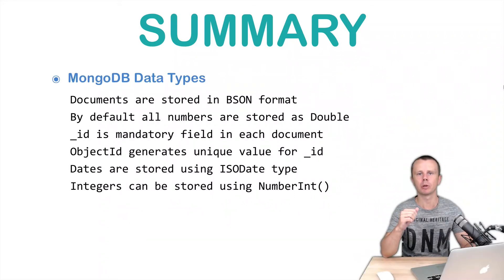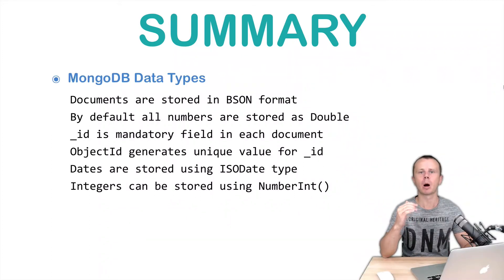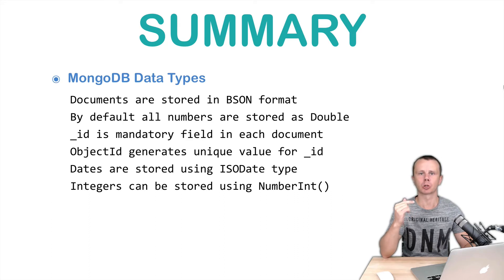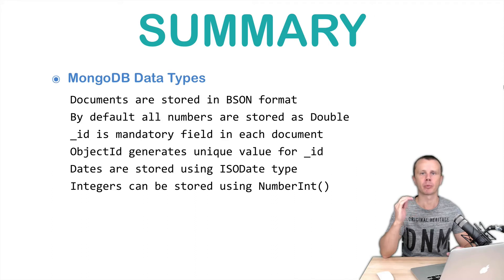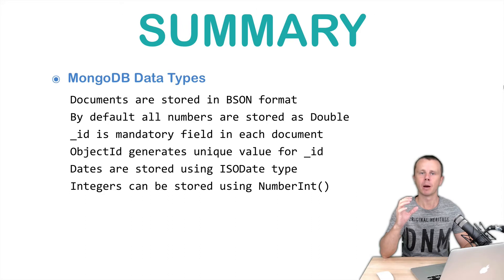Let's summarize key points of this module. We have discussed the most commonly used BSON types. Underscore ID is a mandatory field and must be present in each MongoDB document, and the values of this field must be unique across a MongoDB collection.